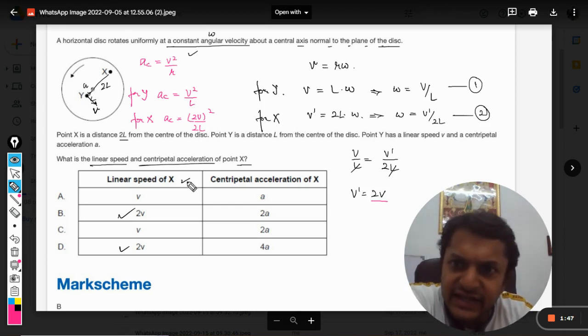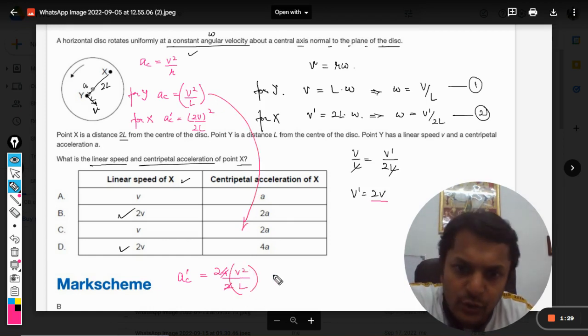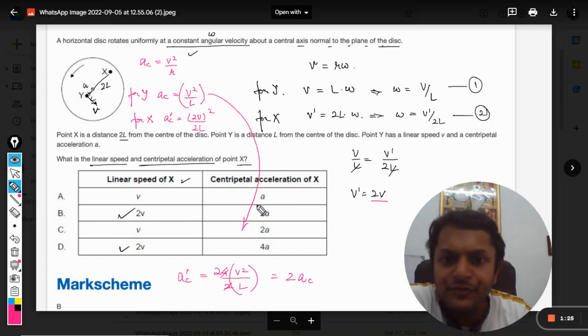From this I can say that a dash equals 4 times v square divided by 2l, so it will be twice of v square by l. And v square by l can be substituted from this equation to this, so it will become twice the acceleration earlier. So it will be 2a, so definitely our answer will be B.